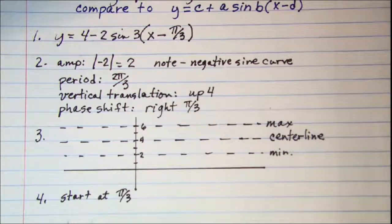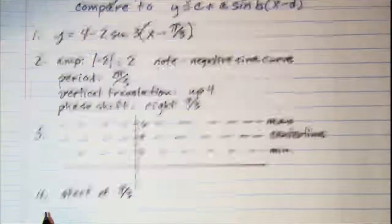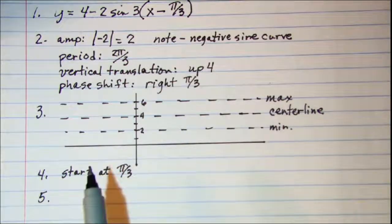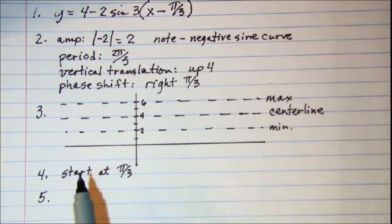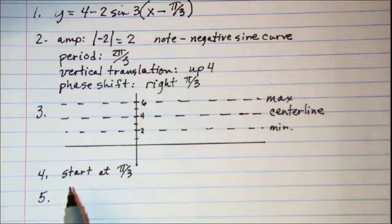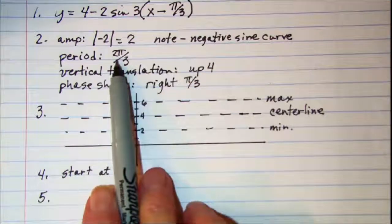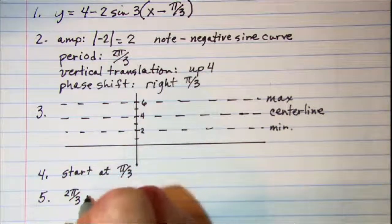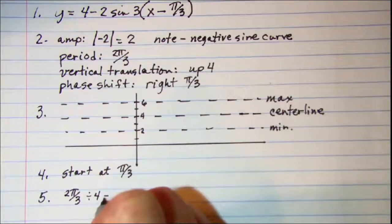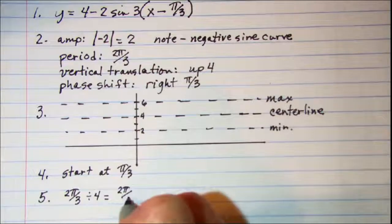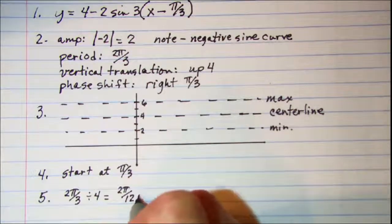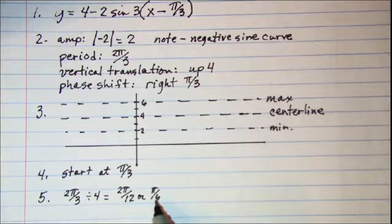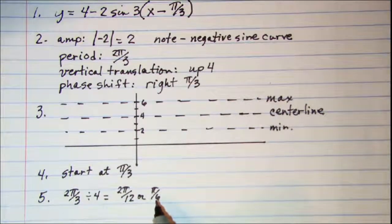And then our period we need to divide by 4. So step 5 is to divide the period into 4 equal parts and see where we plot the points. So our period is 2 pi over 3 divided by 4 gives us 2 pi over 12 or pi over 6. So our space in between our points is going to be pi over 6 radians.